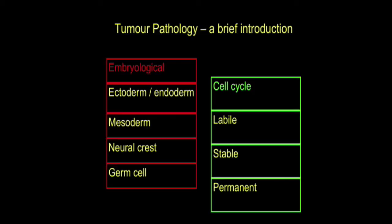Moving to the permanent cell group: these are cells which are not in cell cycle. The theory is that these cells have lost the capacity to divide, and once lost, they're gone for good. This has been modified somewhat in light of modern stem cell research, but broadly speaking there are cell types which are permanent and not replaced. Brain cells and muscle cells are very good examples — we're losing brain cells at the moment and they will never be replaced.